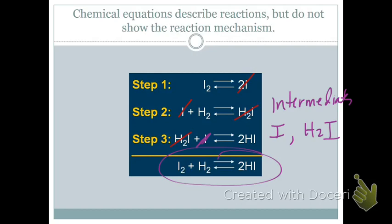The way you can tell the difference between an intermediate and a catalyst: an intermediate is going to be produced in one step and then consumed in a subsequent step — so it's a product first, then a reactant. A catalyst is just the opposite: it starts out as a reactant and ends as a product, showing that it's not being consumed in the reaction.